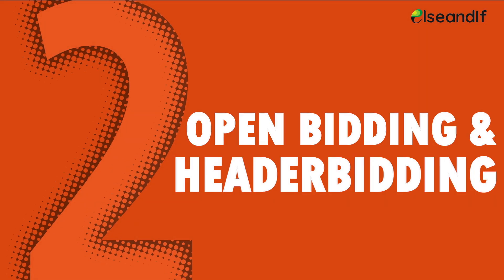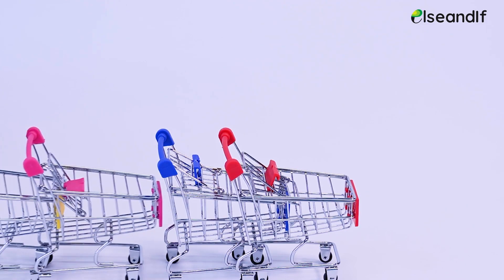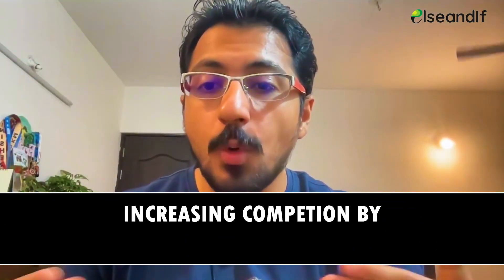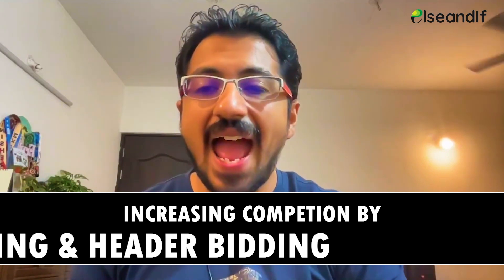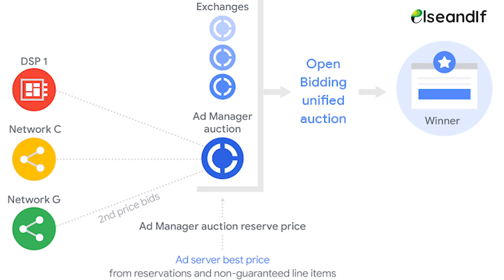Number two: leverage open bidding and header bidding. If you have only implemented AdSense and Ad Exchange and you're not introducing external exchanges competition via header bidding or open bidding, your ad eCPMs are likely to remain stagnant. To push your ad inventories to the next level, you need to introduce more competition by implementing open bidding and header bidding. Open bidding is Google's server-to-server level header bidding solution that comes along with your Ad Exchange account.